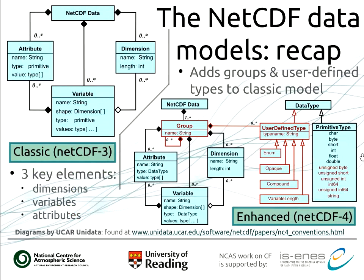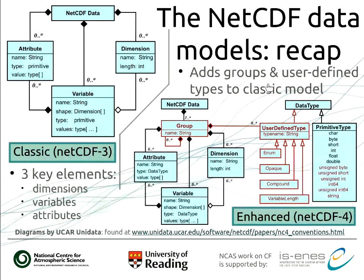Just a quick recap of the data models you've heard about in the previous talk. The key thing is you have your classic data model and your enhanced data model. The classic data model has three core elements: variable, attribute, and dimension. When you move to the enhanced data model, those are still there but they sit within a group structure. You can have a flat structure — essentially no groups — but they're always considered within this group structure. You also have user types, so it's not just primitive C types; users can define their own.